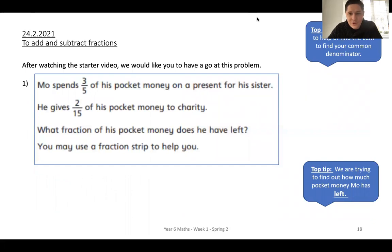So after watching the video, we're going to have a look at this problem here. Mo spends three-fifths of his pocket money on a present for his sister. What a kind young man. He then gives two-fifteenths of his pocket money to charity. What fraction of his pocket money does he have left? You may use a fraction strip to help you. You will have seen fraction strips in the video. What you need to do is convert these into a common denominator so that you can add them up. Then once you've added them up, you can take them away from the whole.